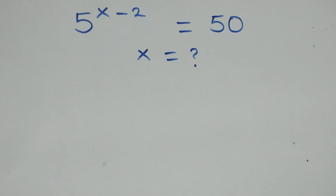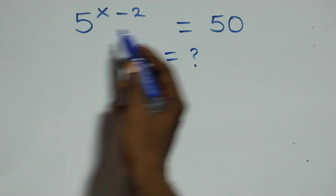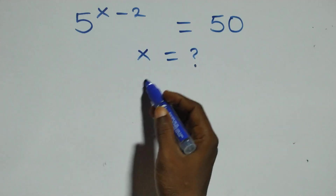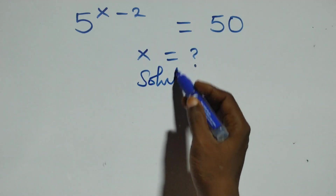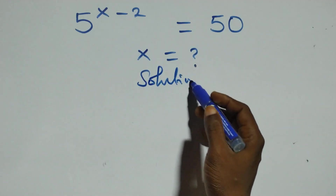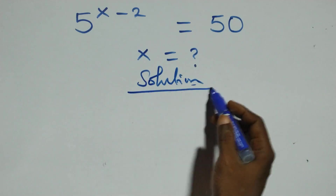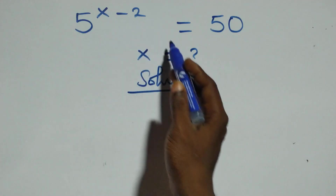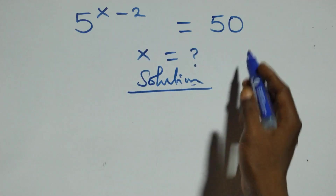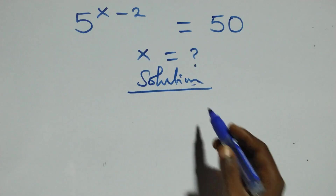Hello, you are welcome. How to solve this nice exponential equation. What we have here is 5 raised to the power x minus 2 equals to 50.